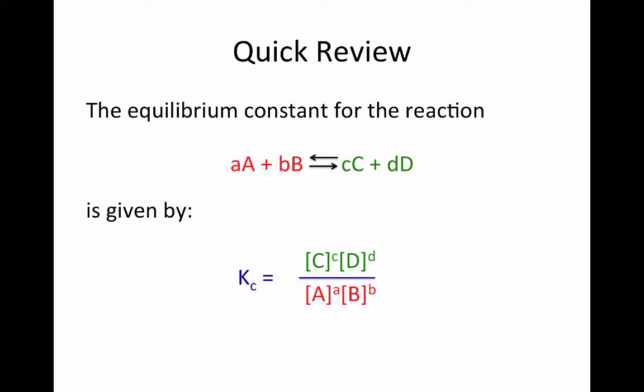To write the equilibrium constant for the reaction, we start with the concentrations of the products — that's the concentration of C and the concentration of D — and each of these is raised to a power that reflects the stoichiometric coefficient. So we have the concentration of capital C raised to the small c power, and the concentration of capital D raised to the small d power.